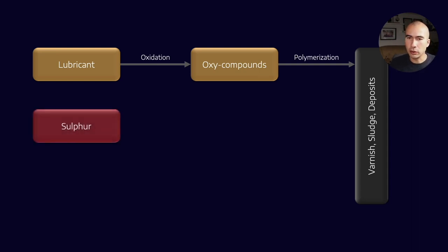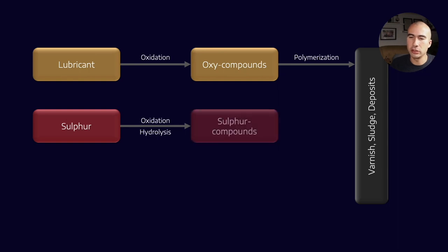The second way involves sulfur compounds undergoing oxidation and hydrolysis, producing sulfur compounds which polymerize into varnish and sludge. There's also a nitration pathway, in which nitrogen compounds oxidize and polymerize.